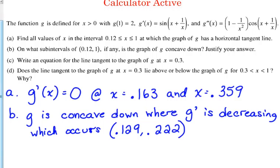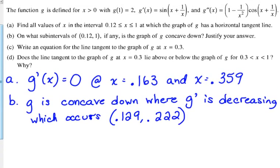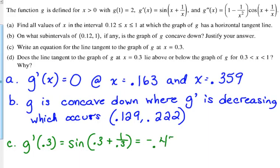Write an equation for the tangent line to the graph of g at 0.3. What do we have to have for equations of tangent lines? The derivative gives us the slope. So we've got to have the slope, and we have to have a point. So g prime of 0.3 equals the sine of 0.3 plus 1 over 0.3. Use your calculator to calculate that. It is negative 0.472.